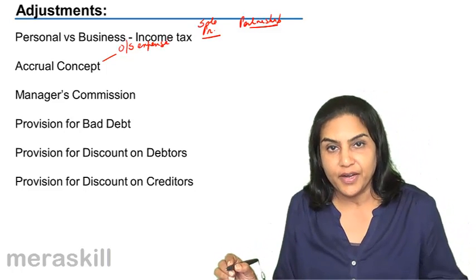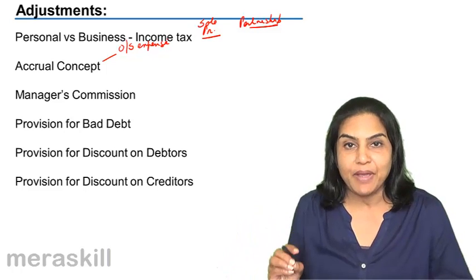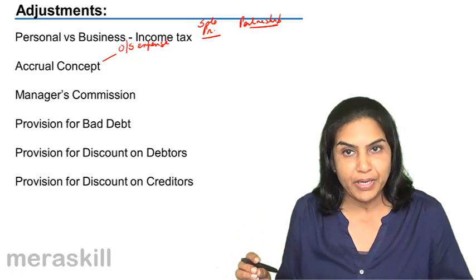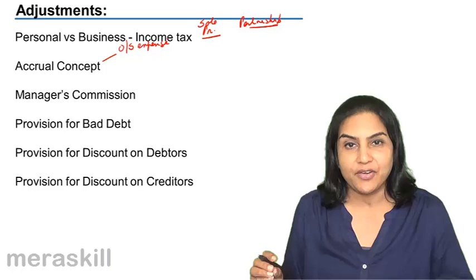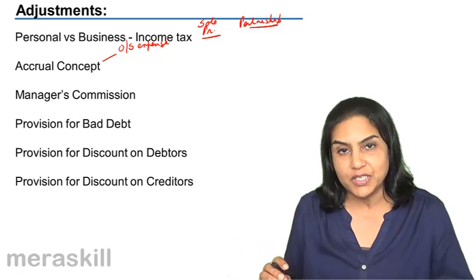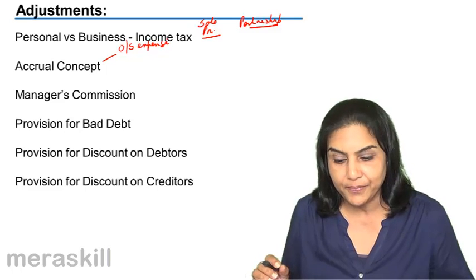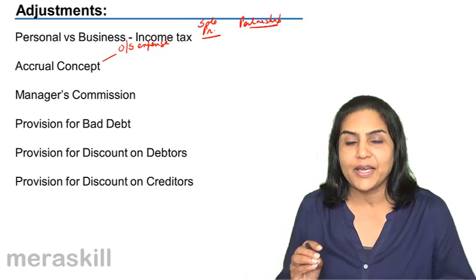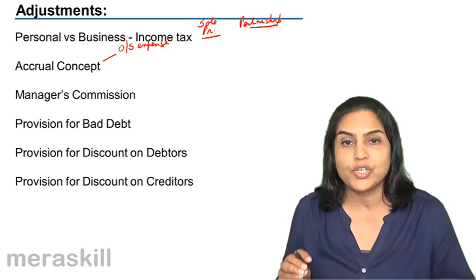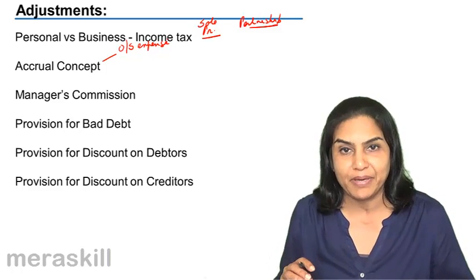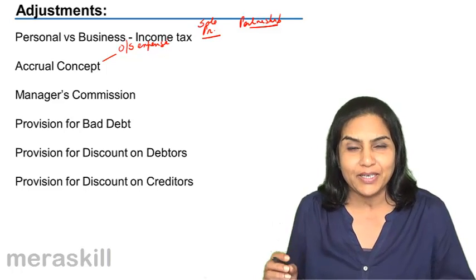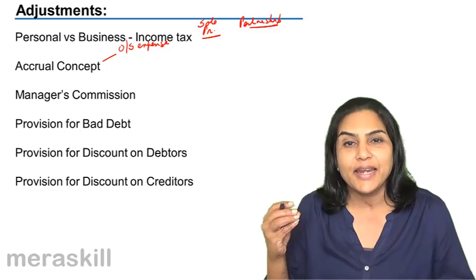At the end of the year, it is possible that there are some expenses which have not yet been paid. For example, salaries, because it is the practice of the business maybe to pay salaries by the fifth of the next month. So, usually there may be some such expenses which are due, which should have been paid by the year end, but which by practice are paid only in the next month.